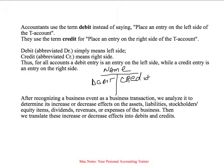Accountants use the term debit instead of saying 'place the entry on the left side of the T-account.' Debit, abbreviated as DR, simply means left side. And a credit simply means right side. Debit means left in 14th century Italian language, and credit means right. Credit comes into the English language — there's good credit and bad credit — but don't think of it that way. Credit simply means right-hand side. That's how accountants talk.